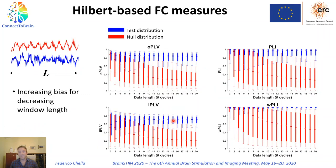I will first discuss the results obtained for connectivity metrics based on the Hilbert transform. This plot shows the box plots of the distributions of the connectivity metrics as a function of the data length L, measured in number of cycles of the oscillations at the frequency of interest. For instance, in these simulations we simulated 10 Hz activity, so one cycle equals 100 milliseconds. You can see that for decreasing data length there is an increasing bias, denoted by the fact that data from the null distribution in red — data without interaction — become quite large. This means that if we use short windows, even signals which were not interacting appear to be interacting, and therefore at short window length it is difficult to distinguish a true positive from a false positive.